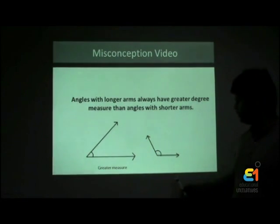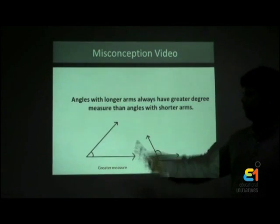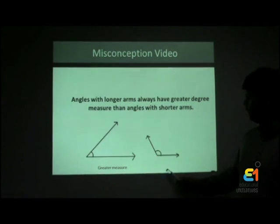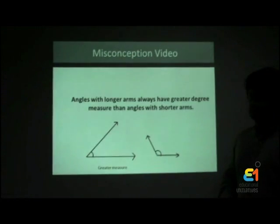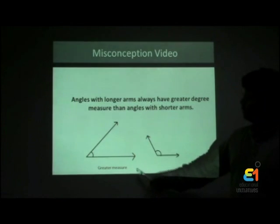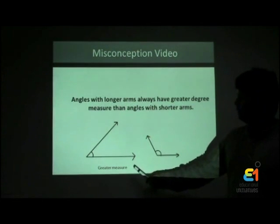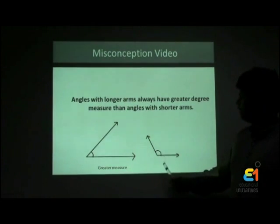Two angles are shown on the screen, an acute angle with long arms and an obtuse angle with shorter arms. Students who have this misconception will say that the acute angle with long arms has greater degree measure than the obtuse angle with short arms.